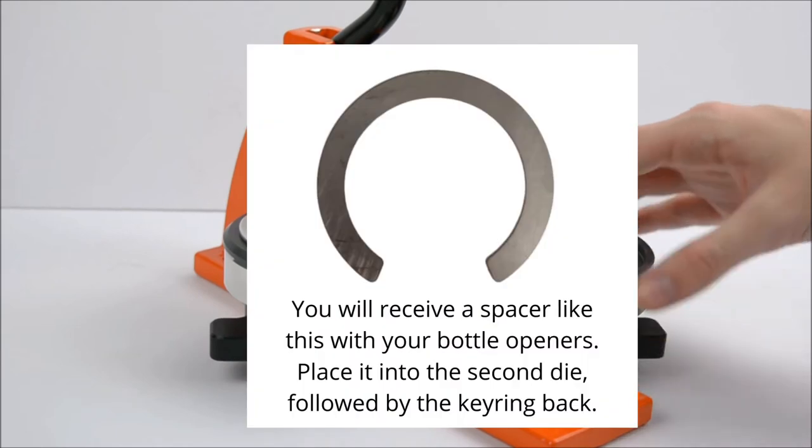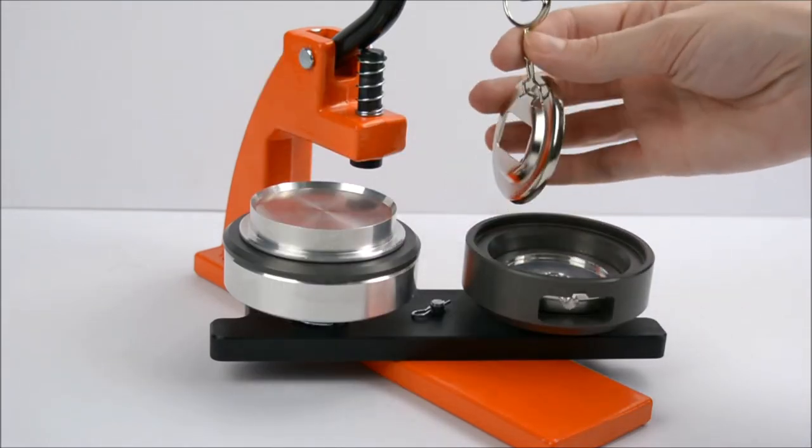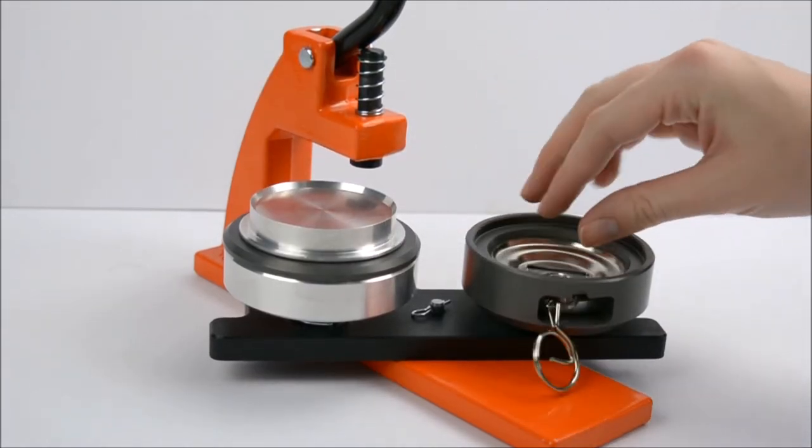You will receive a spacer like this with your bottle openers. Place it into the second die, followed by the keyring back, sliding the keyring through the hole in the side of the die.